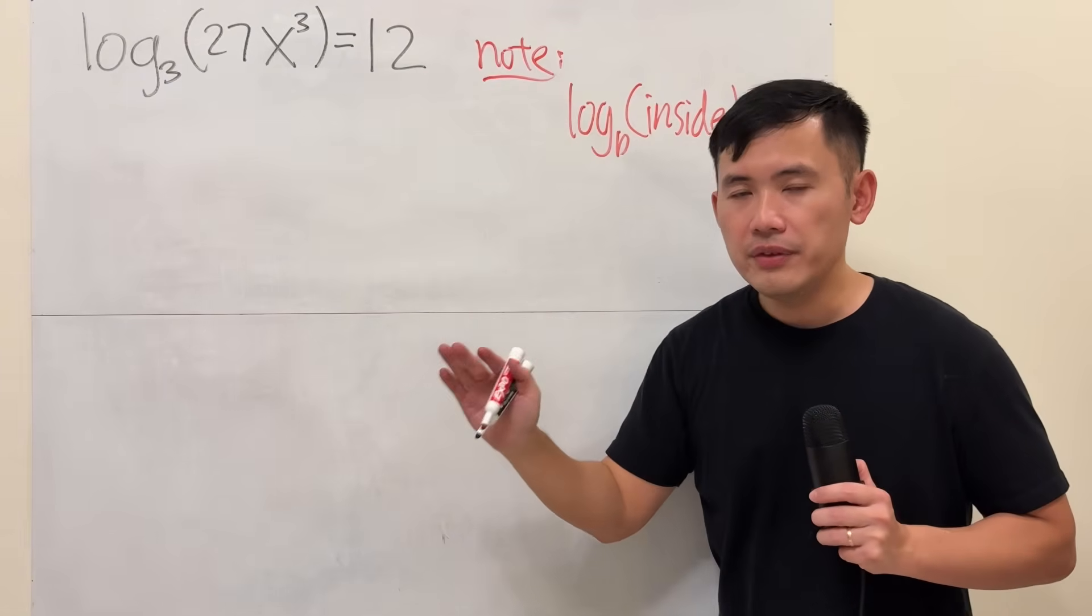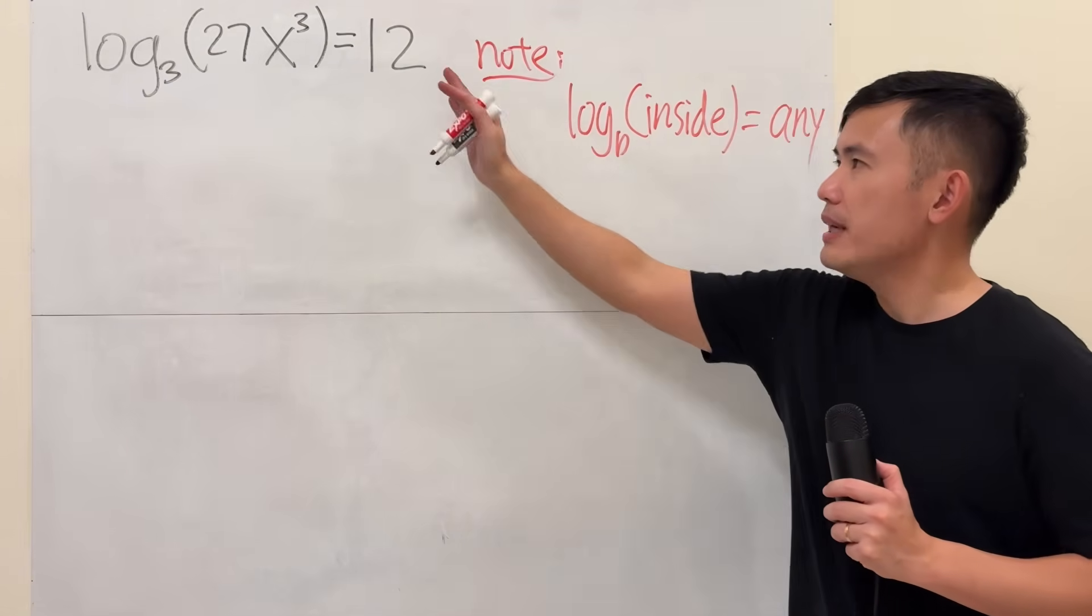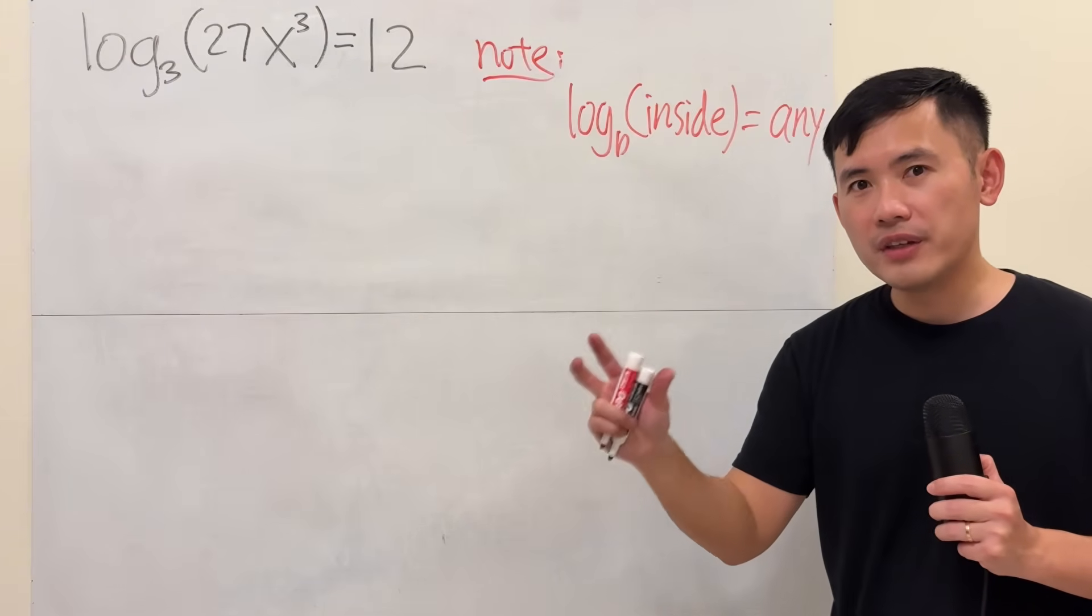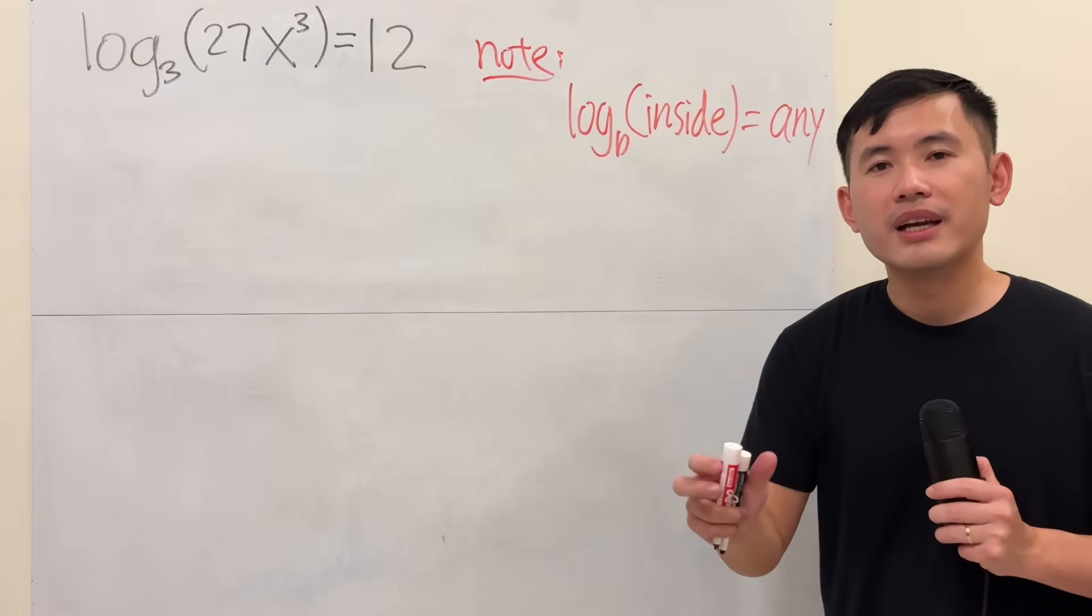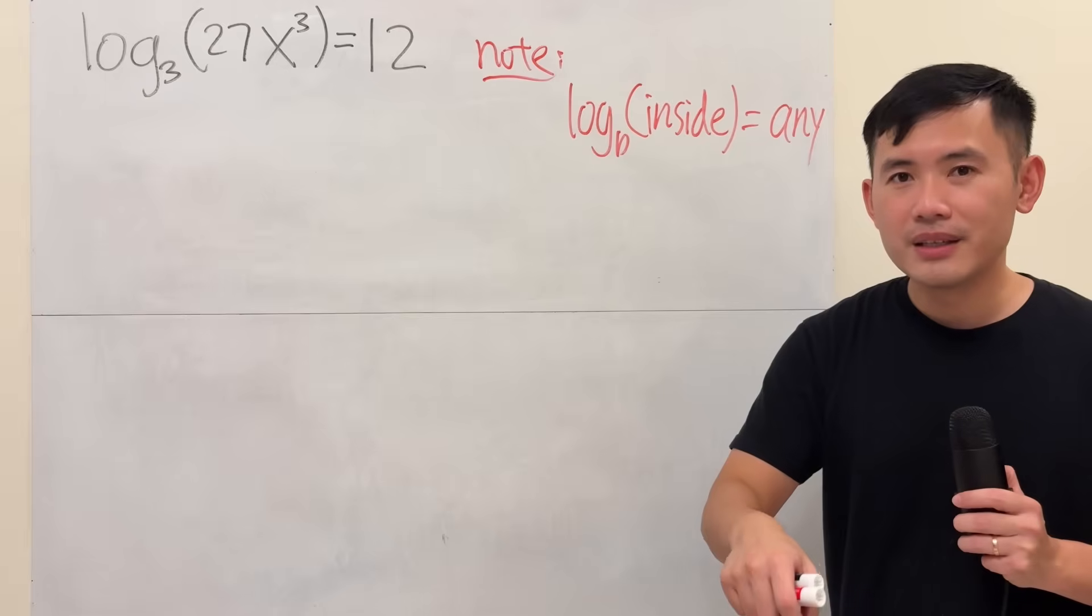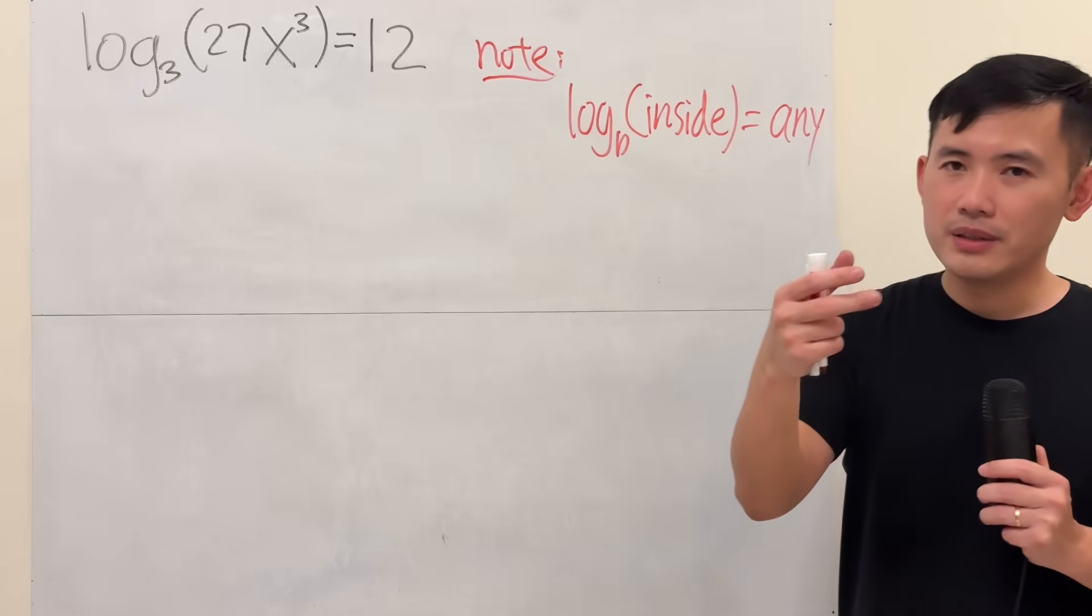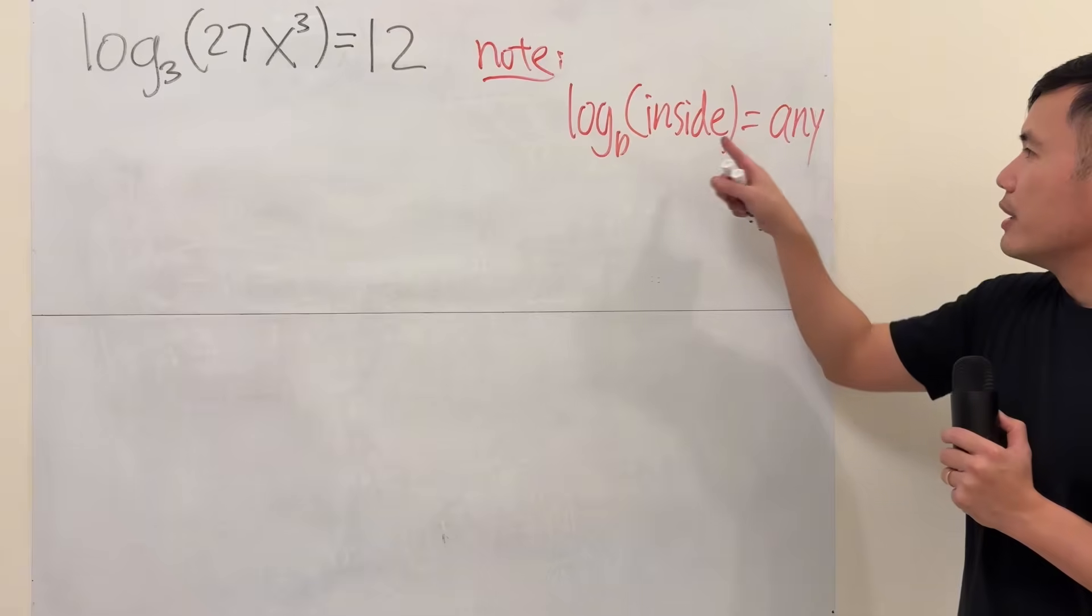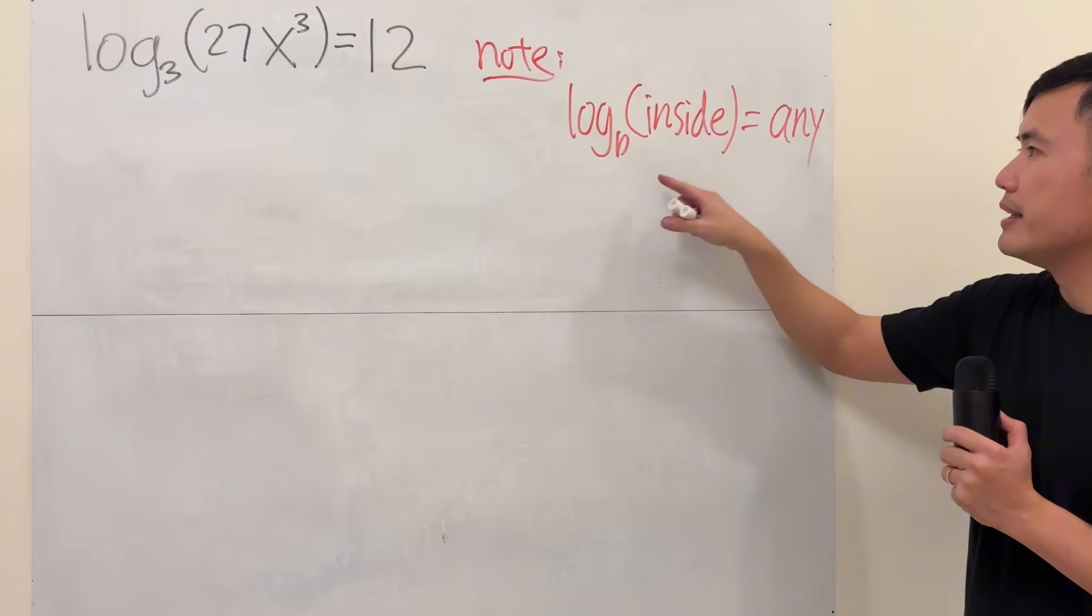This could be negative, it could be zero, it can be a fraction, it can be any number. You have to be careful, because sometimes when you are solving an exponential equation that you use log to solve it, exponential equations cannot end up with a negative number. But that's a topic for another video. So, log can equal any number at the end.